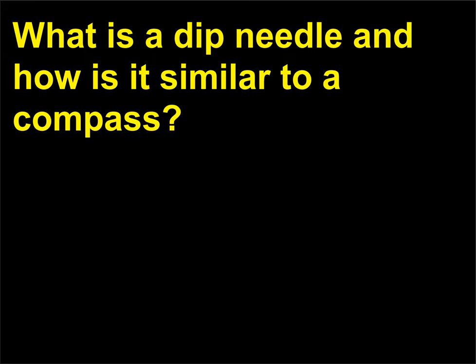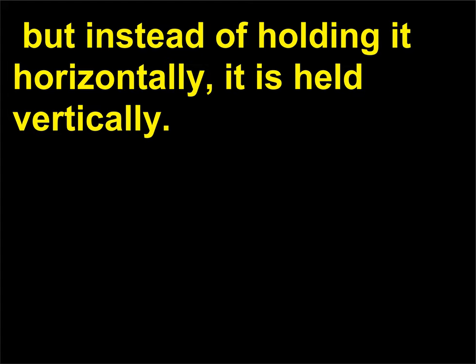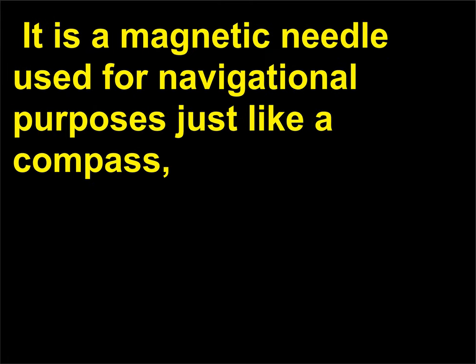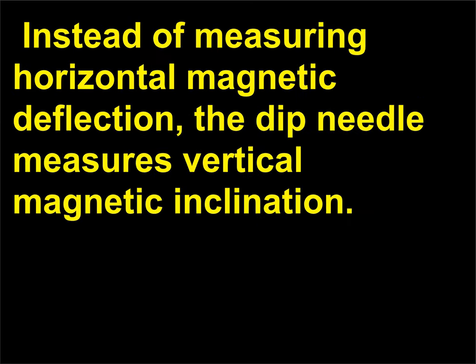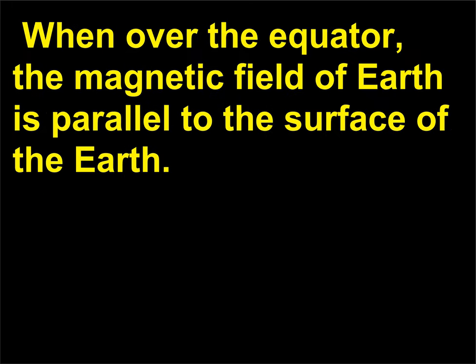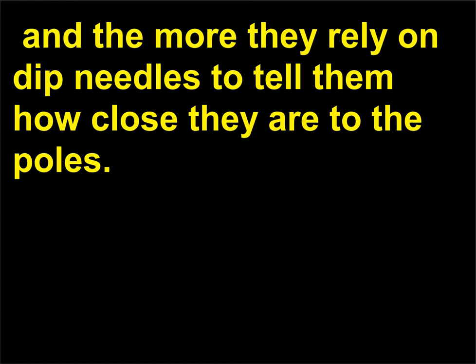What is a dip needle and how is it similar to a compass? A dip needle is just like a conventional compass, but instead of holding it horizontally, it is held vertically. It is a magnetic needle used for navigational purposes just like a compass, but is used predominantly when traveling around the north and south poles. Instead of measuring horizontal magnetic deflection, the dip needle measures vertical magnetic inclination. When over the equator, the magnetic field of earth is parallel to the surface of the earth. The closer one gets to the magnetic poles, however, the less pilots rely on compasses, and the more they rely on dip needles to tell them how close they are to the poles.